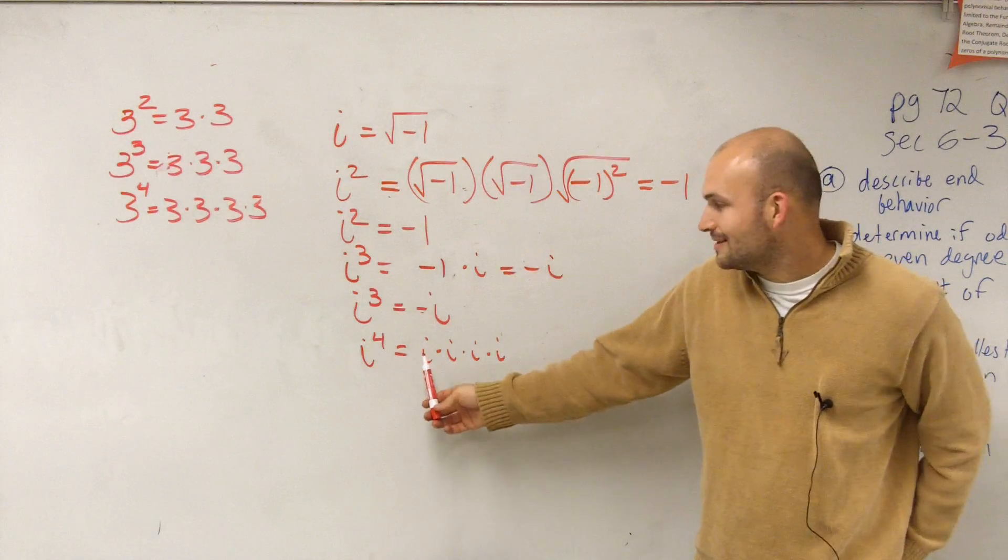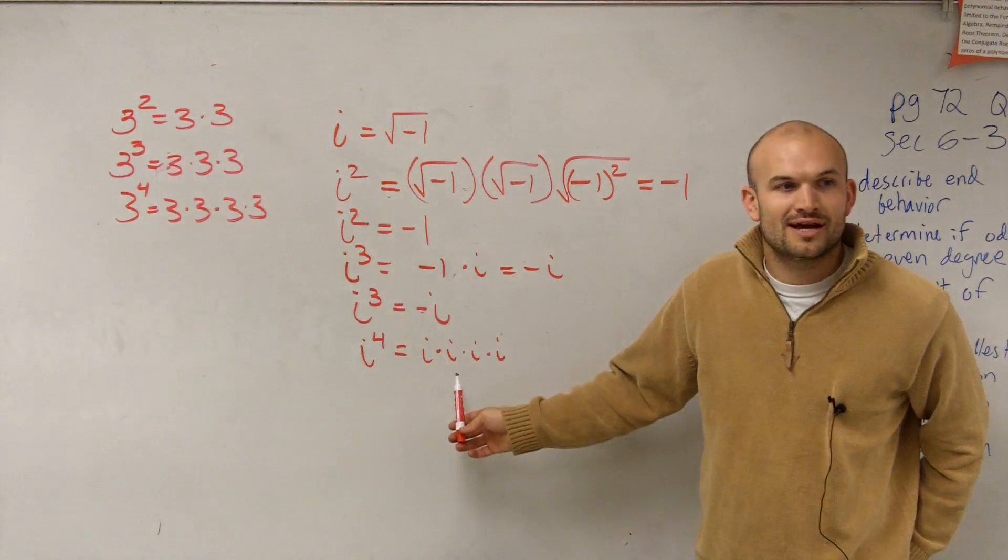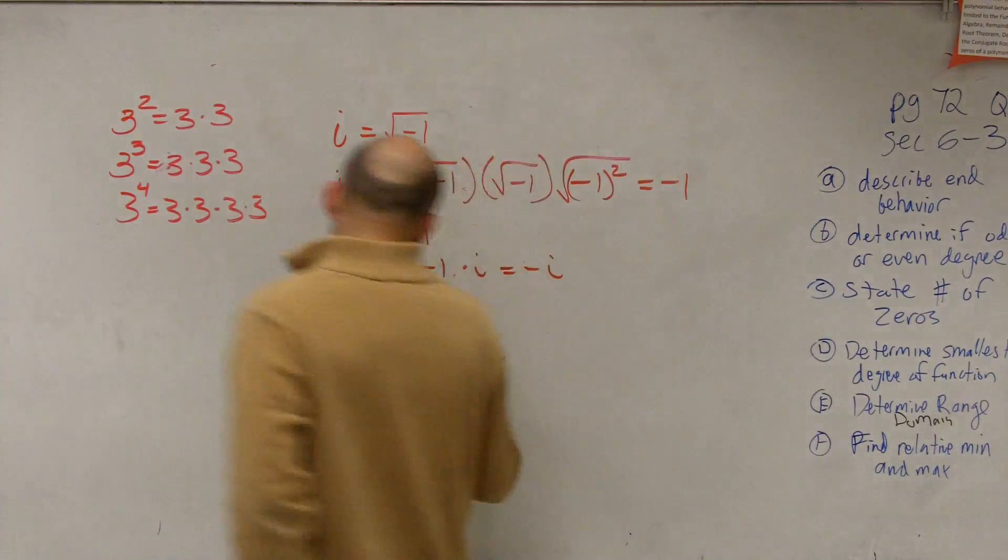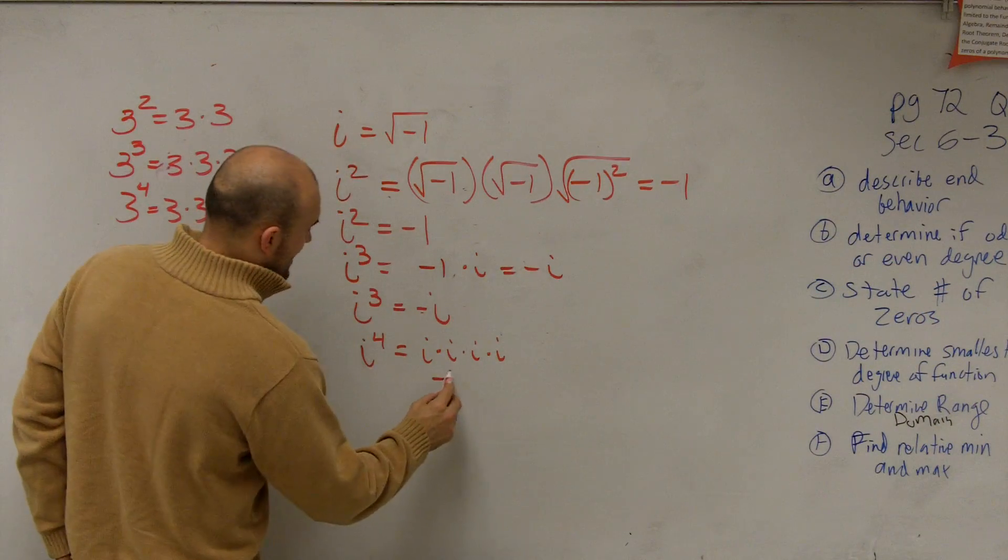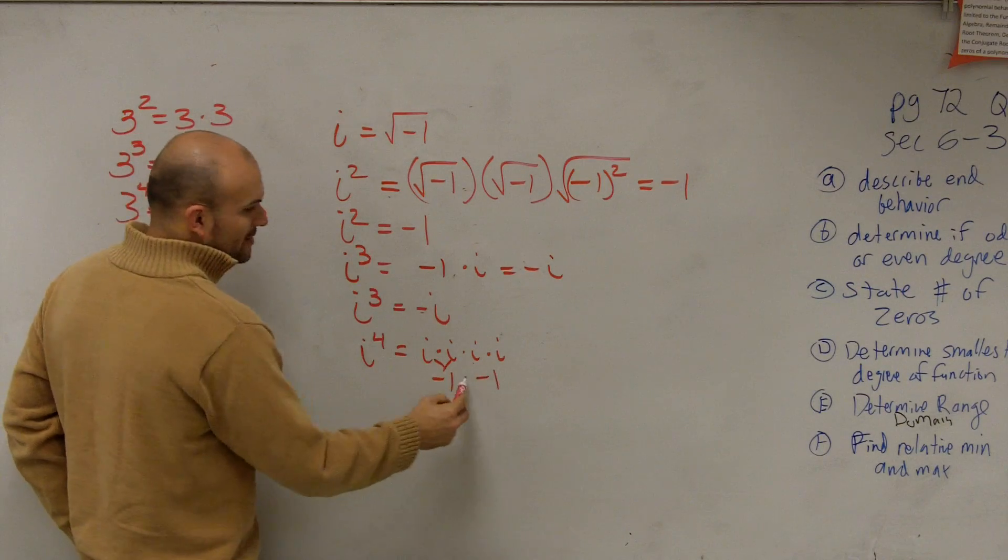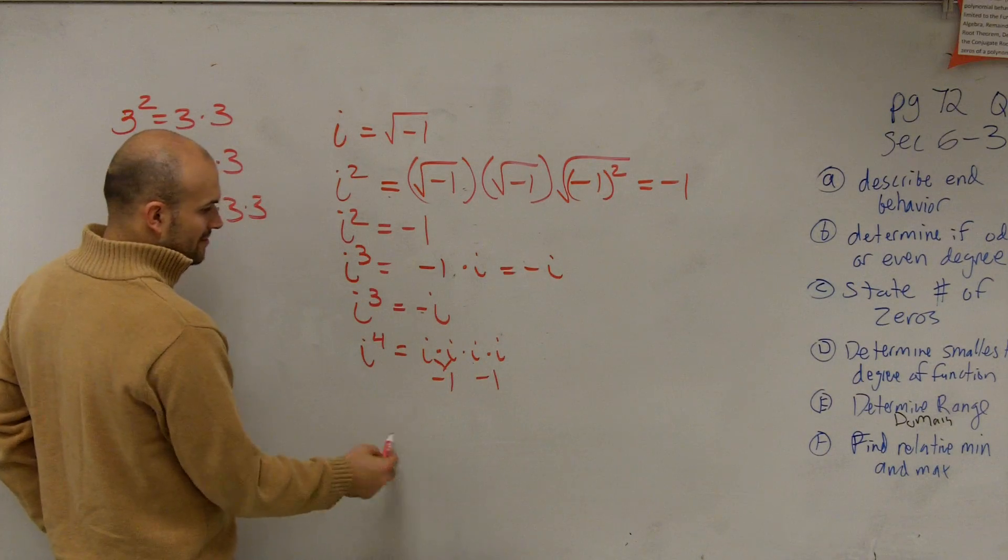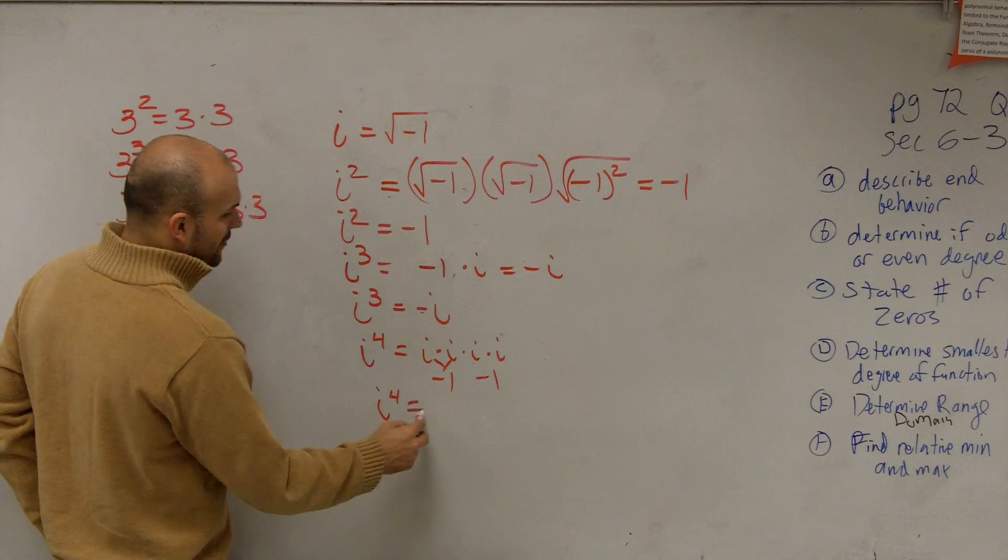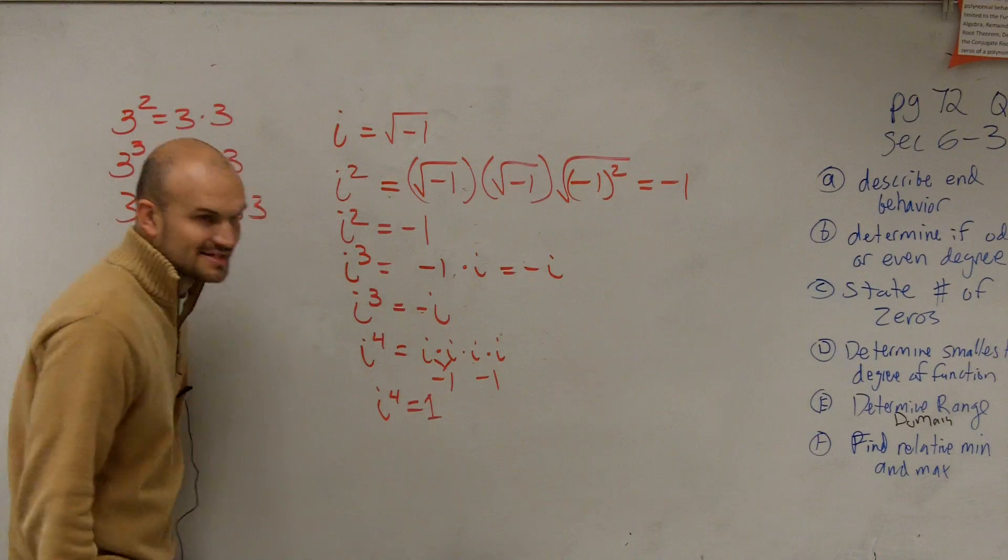So here we go. What's i times i? It's i squared, right? Yeah, but it is. So we already know that is going to equal negative 1. And what's i times i here? That's negative 1. Negative 1 times negative 1 equals positive 1. So i to the fourth equals positive 1.